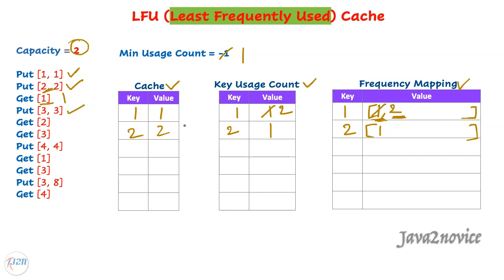The next action is a put call. The cache is already at its maximum capacity of two, so there is no room for a new element. We must evict one element before adding another. Based on our minimum usage count variable, the least frequently used count is one. So key two is the key to be evicted — remove it from the frequency map, delete its entry from the key map, then add the new entry: key three with count one. We add key three to the count-one linked list.